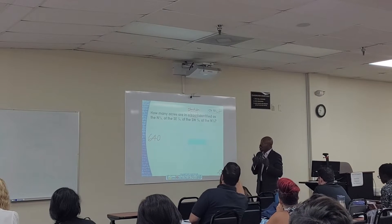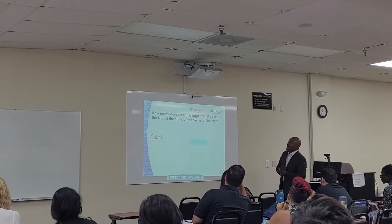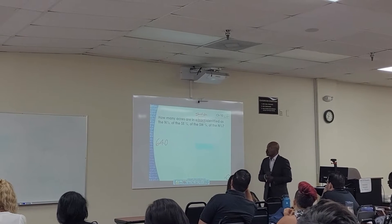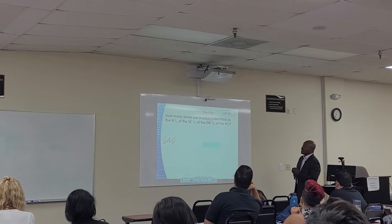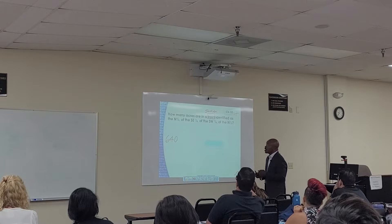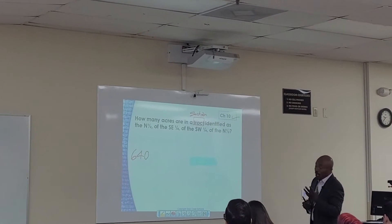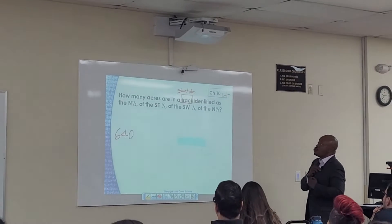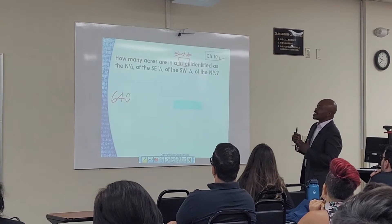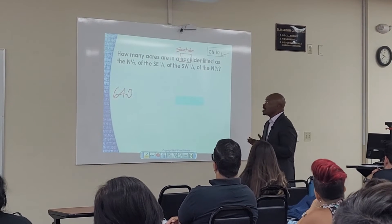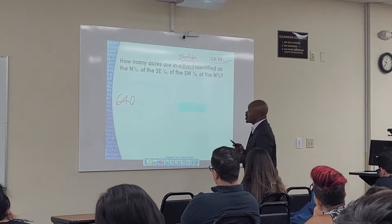How many acres are in a tract identified as the north one-half of the southeast one-quarter of the southwest one-quarter of the north one-half? Whenever you see whether they use tract or piece of land, you want to consider that as a section. And we already said a section has 640 acres.